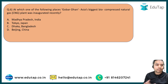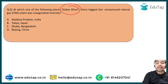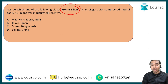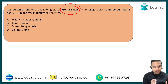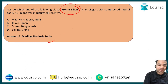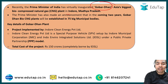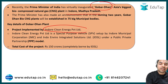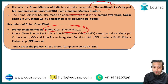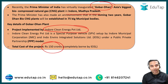The sixth question: Asia's largest biocompressed natural gas plant named Govardhan was recently inaugurated — where? Options are Madhya Pradesh India, Tokyo Japan, Dhaka Bangladesh, or Beijing China. The right answer is Madhya Pradesh, India. Prime Minister recently inaugurated this plant in Indore, Madhya Pradesh. It will be implemented by Indore Clean Energy Private Limited at a total cost of ₹150 crores.